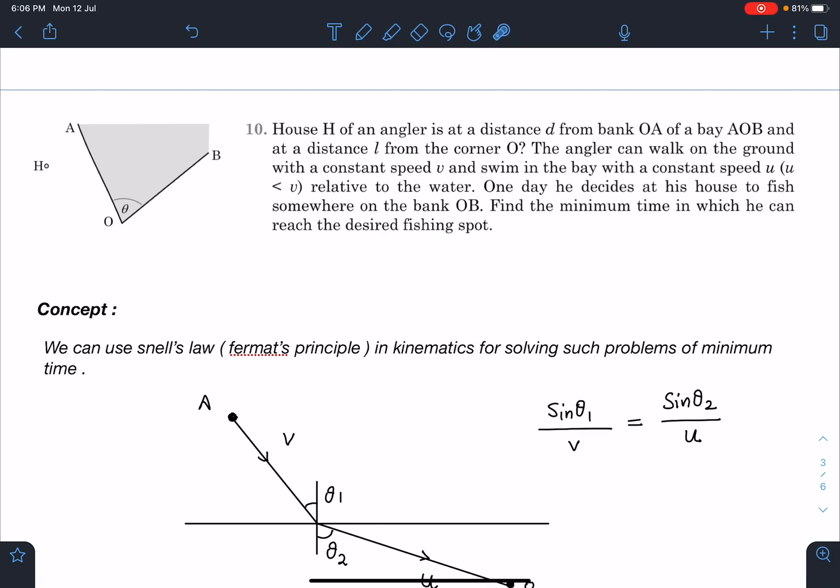with a constant speed v and swim in the bay with a constant speed u, where u is less than v relative to water. One day he decides at his house to fish somewhere on the bank OB. So somewhere here he is going to go for fishing.